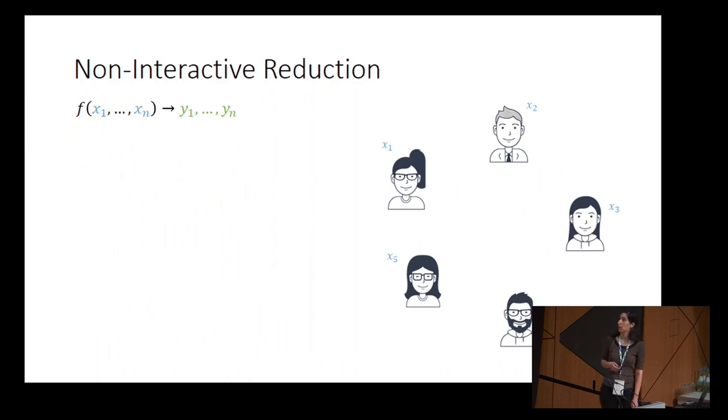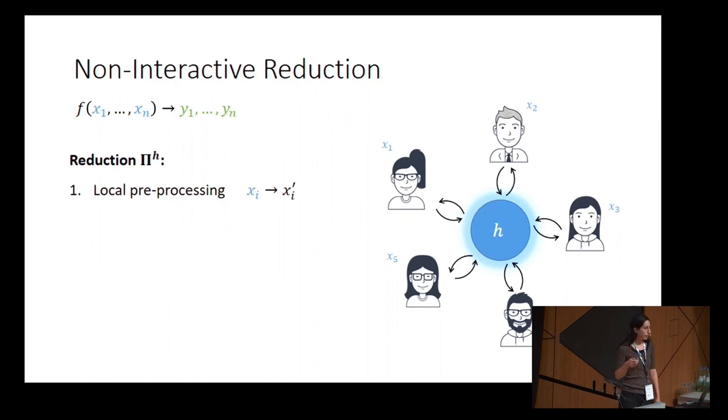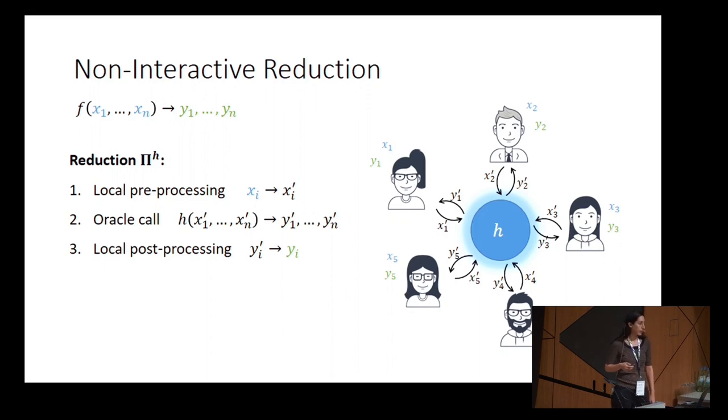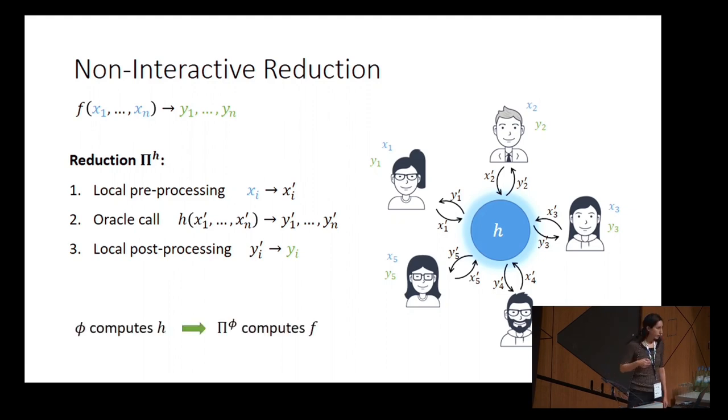What is a non-interactive reduction? Let's say we have this function that the parties want to compute, but instead of communicating with each other, there is some oracle that computes a functionality h. The only thing the parties can do is query once this oracle. The reduction has a very specific structure. In the first step, each party can do some local preprocessing over its input. Then they all perform an oracle query sending their processed inputs, get a response, and eventually each can do post-processing and derive the final output. When we consider the malicious setting, the only chance of the parties to deviate from the protocol is in the preprocessing phase. That fact will be important for us later.